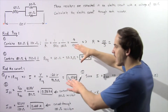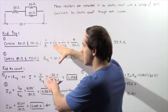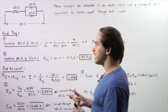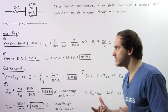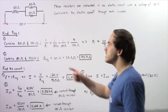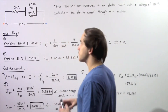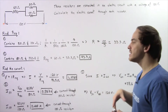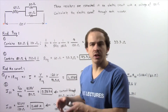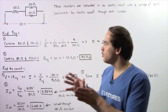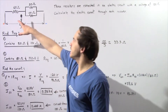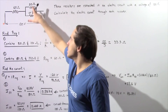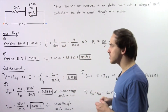We're going to break our problem down into two steps. In the first step, we want to calculate the equivalent resistance that will replace these three resistors. Then we want to use that in step two to calculate the total electric current, and we can use that to calculate the individual current that passes through each one of these resistors.